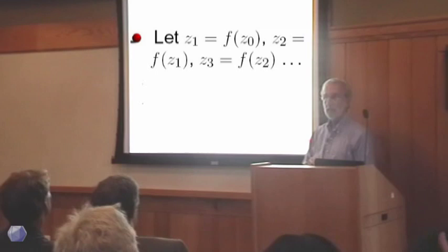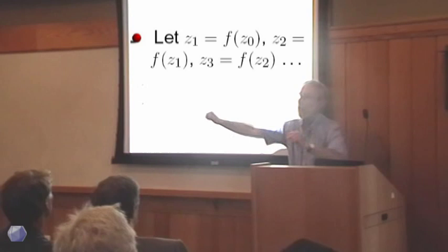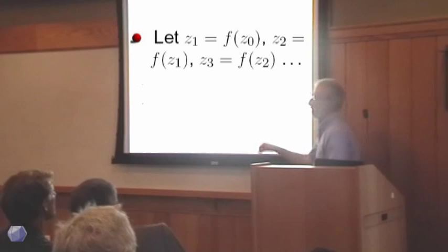Now suppose I choose a point Z naught, and I apply F to it, I get another point which I'll call Z1. And I take Z1, apply F to it, I get another point Z2. And this way I get what mathematicians would call a dynamical system. One should move around the plane in sequence.